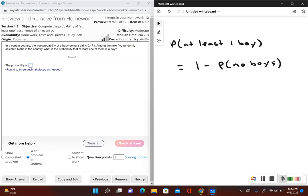So now in order to find the probability of no boys, well, what would that mean is that all five babies are girls. So we want to find the probability that we have five girls in five births.